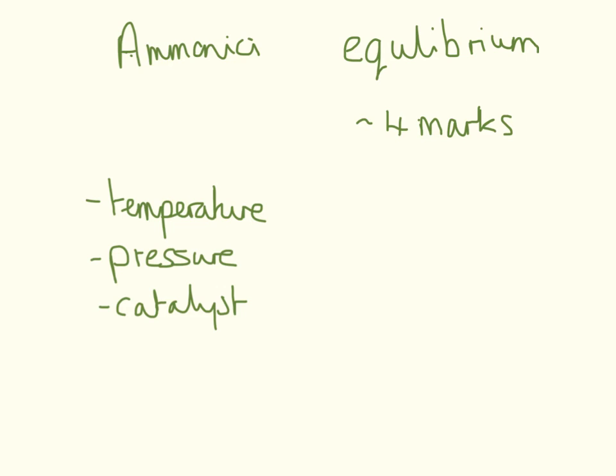So there hasn't been a big question on this for a while. So I reckon it's going to be a question on equilibrium. This is going to be worth at least four marks, I reckon. So you're going to need to know how temperature, pressure and a catalyst affects the equilibrium of ammonia production.